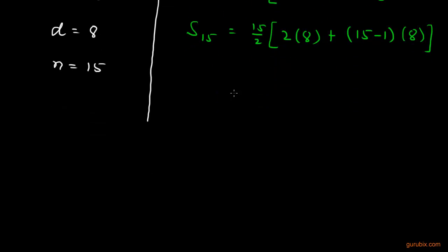We shall calculate this value. This is 15 over 2. 2 into 8 equals 16, and 15 minus 1 equals 14, and 14 multiplied by 8 equals 112.